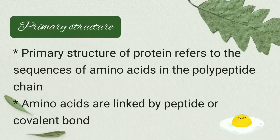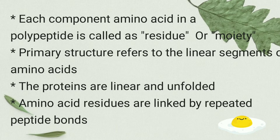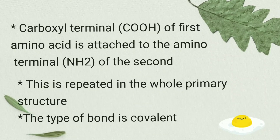Primary structure of protein: In the primary structure, amino acids are linked together by peptide bond or covalent bond. In a polypeptide chain, an amino acid is called a residue or moiety. Amino acids in a primary structure are arranged as linear segments — that is, the primary structure is not folded; it has an unfolded structure. The carboxyl group of the first amino acid is attached to the NH2 group of the second amino acid.